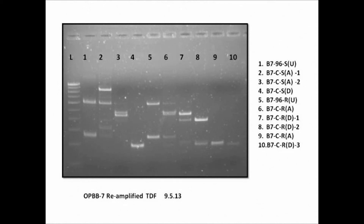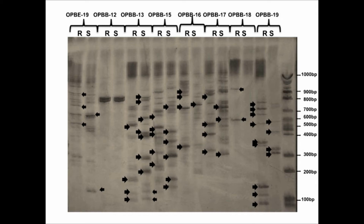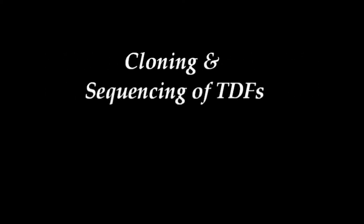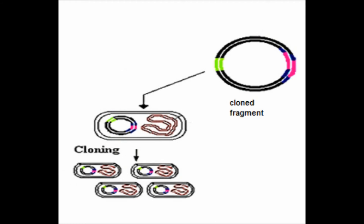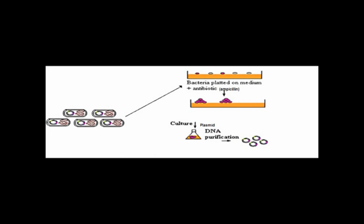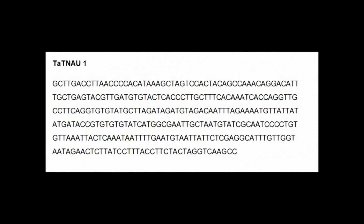The size of the transcript-derived fragments ranged between 100 to 900 base pairs, and most of them were expressed after 96 hours of pathogen inoculation. The transcript-derived fragments were eluted using agarose gel and sent for sequencing. Twenty-one differentially expressed transcript-derived fragments were cloned into a vector and transformed into E. coli strain DH5-alpha using calcium chloride treatment. Recombinant colonies were picked randomly and cultured overnight in 5 ml of LB broth containing ampicillin. Plasmids were isolated and sequencing was done by the Sanger method using M13 primers, denoted as TATNAU1–21.